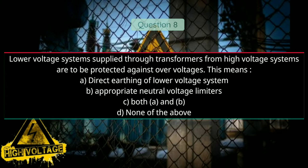Question number eight: Lower voltage systems supplied through transformers from high voltage systems are to be protected against over-voltages. This means — Option A: direct earthing of lower voltage system, Option B: appropriate neutral voltage limiters, Option C: both A and B, and Option D: none of the above. Correct answer will be C, both A and B.